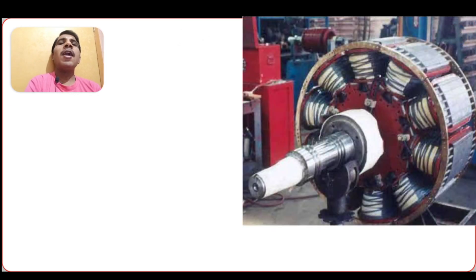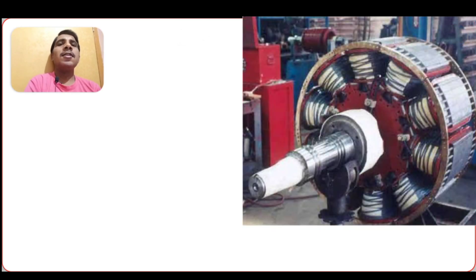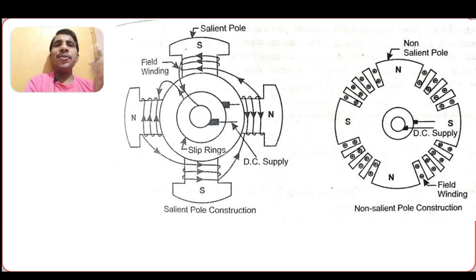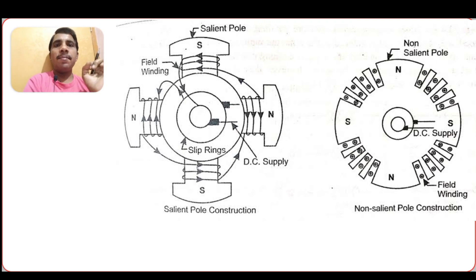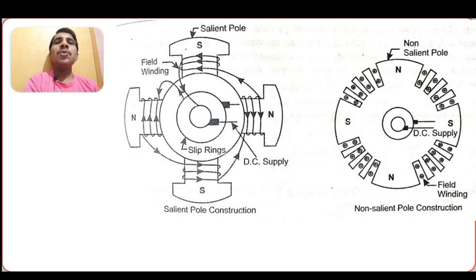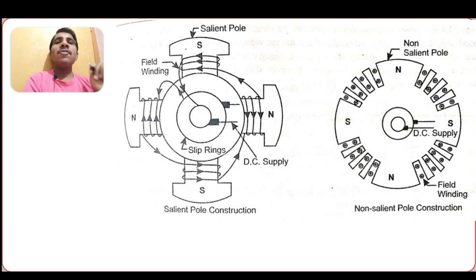The rotating part of an alternator is called the rotor. There are two types of rotors: salient pole type, where the poles are projected, and cylindrical rotor type, which has a cylindrical structure. So two types of rotors are there — one is salient pole and another one is cylindrical.